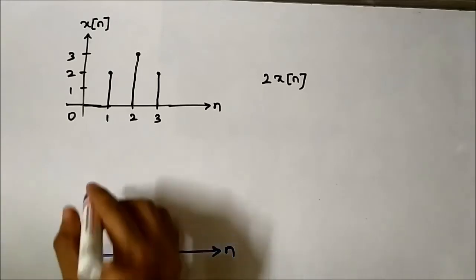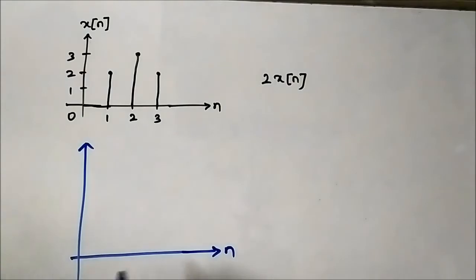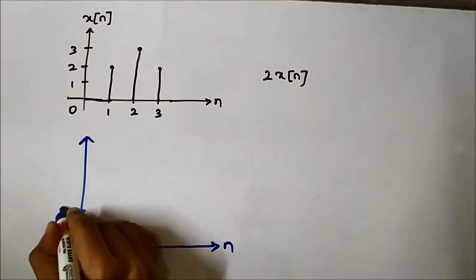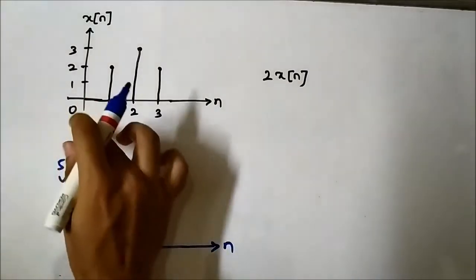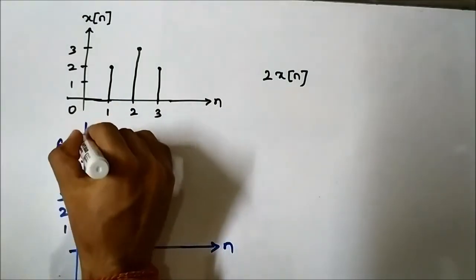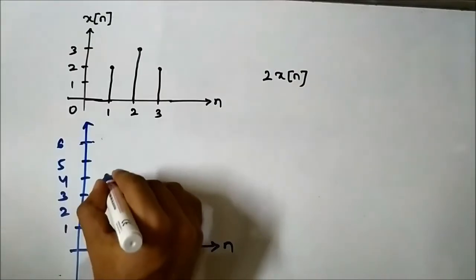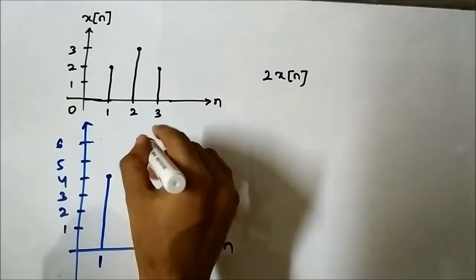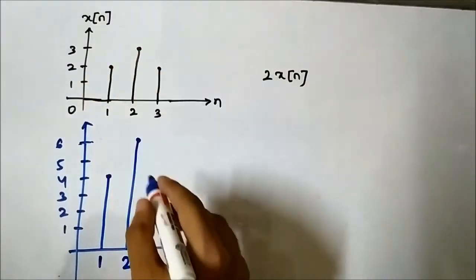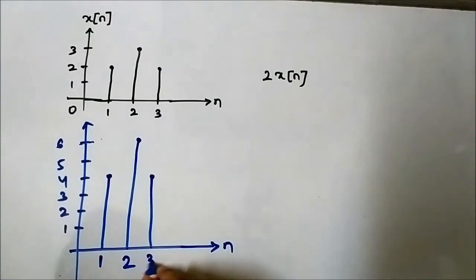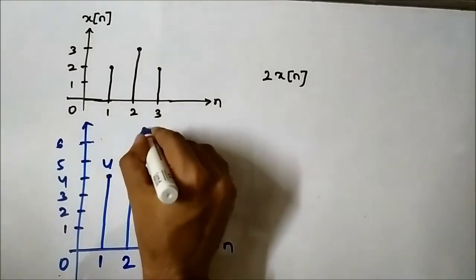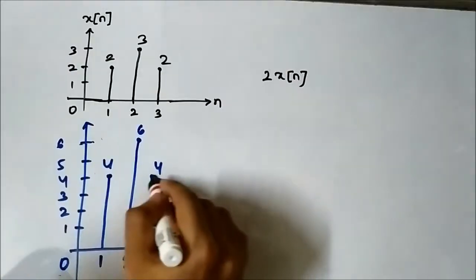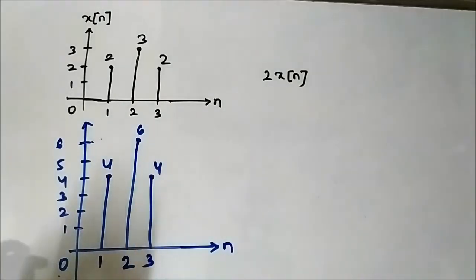So drawing the time axis: the amplitude axis will go up to 1, 2, 3, 4, 5, 6. At n=1 the amplitude is 2, so it will become 4. At n=2 it is 3, so it will become 6. And at n=3 it is 2, so it will again become 4. So we get 4, 6, 4 — the original amplitudes were 2, 3, 2, and the amplitude at each distinct point got multiplied by 2.